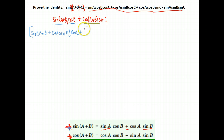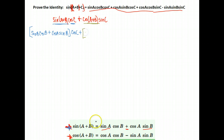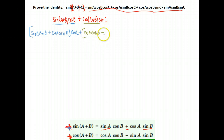Now let's expand cosine of A plus B. I'm going to put it in brackets so that I don't forget to multiply sine C times all of it. The cosine of two angles added is: cosine of the first angle, cosine A, times the cosine of the second angle, cosine B, then minus — notice that's the opposite sign, which happens with our cosine identities — the sine of angle A times the sine of angle B. And that was all multiplied by sine C.